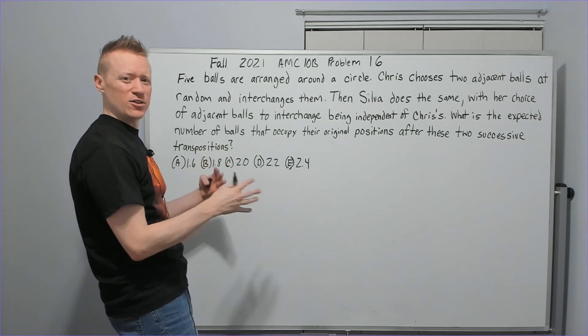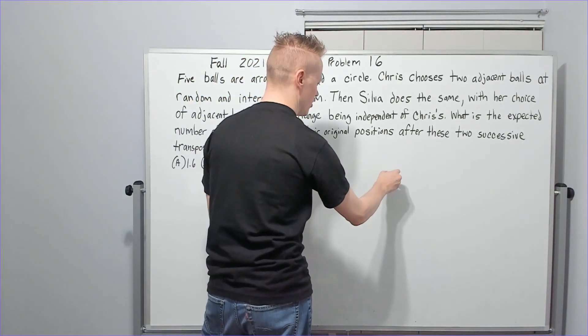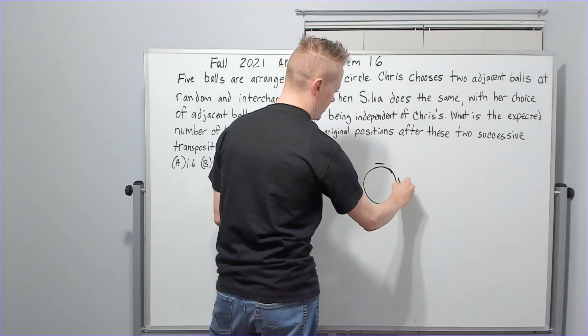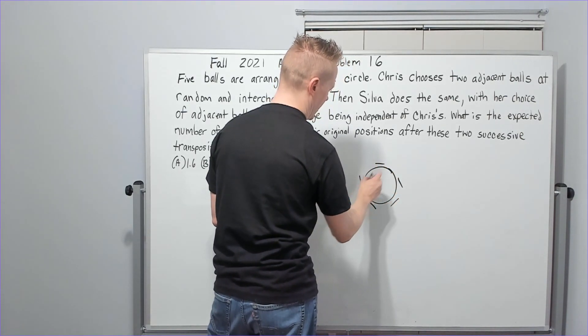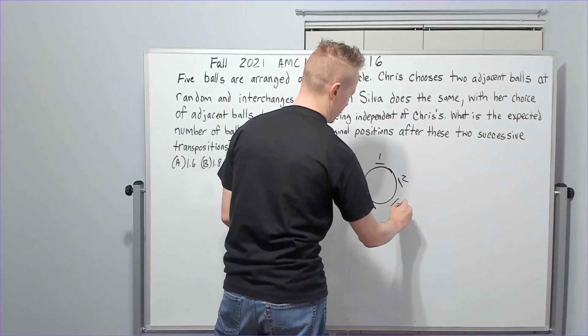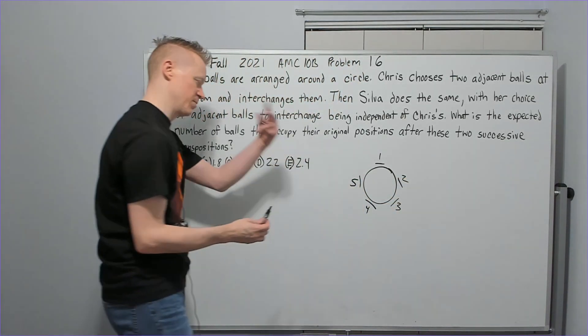Okay getting kind of confusing right? Let's make a picture, a circle. We'll call them one, two, three, four, five. We'll actually label them one through five. Okay, those are the balls.